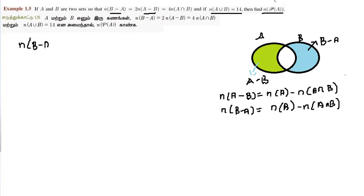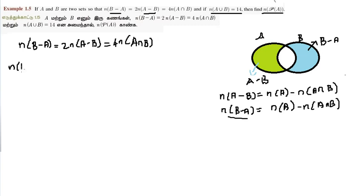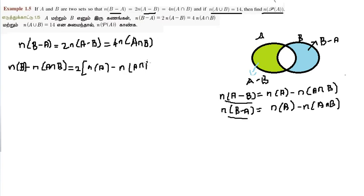From the given conditions: n(B minus A) equals 2n(A minus B) equals 4n(A intersection B). Applying the formula, n(B minus A) equals n(B) minus n(A intersection B), and n(A minus B) equals n(A) minus n(A intersection B). Substituting: n(B) minus n(A intersection B) equals 2 times [n(A) minus n(A intersection B)] equals 4n(A intersection B).